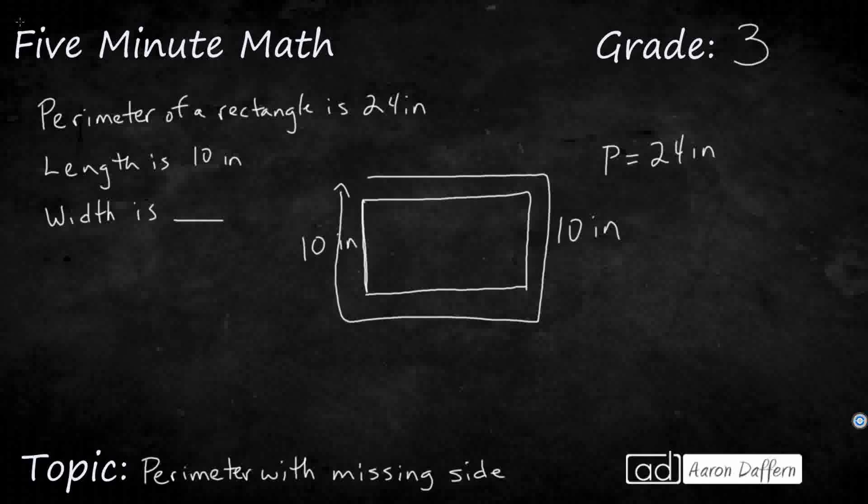So, let's see what we have so far. Our perimeter, remember, is going to be the length plus the length plus the width plus the width, all four sides. We know that our lengths are 10 inches. So we can substitute that in.